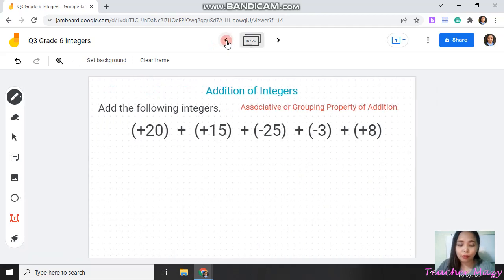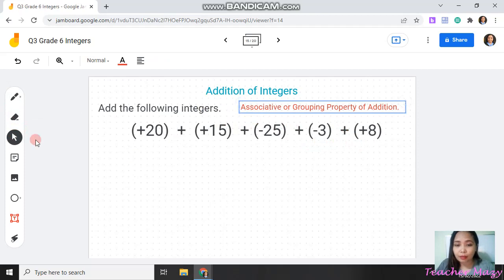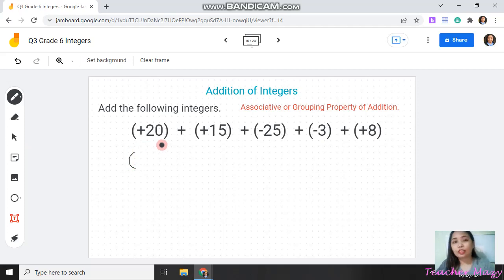Let's have another example. For this one, positive 20 plus positive 15 plus negative 25 plus negative 3 plus positive 8. Let's add this using the associative or grouping property of addition. So, let's group all the integers with like sign. We have positive 20 plus positive 15 plus positive 8.